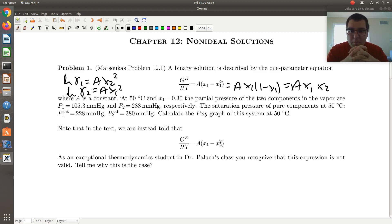All right, so our a is a constant at 50 degrees C, and x1 is equal to 0.3. The partial pressure of the two components in the vapor phase are that. The saturation pressure of pure components at 50 degrees C is that. Construct a PXY graph for the system at 50 degrees C. All right, so we're asked to construct a PXY phase diagram.